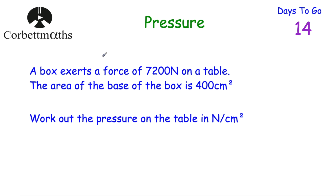A box exerts a force of 7,200 newtons on a table. The area of the base of the box is 400 centimetres squared. We've been asked to work out the pressure on the table in newtons per centimetre squared. Press pause and try this. We want how many newtons are applied for each centimetre squared, so we take 7,200 and divide it by 400 — that gives us the pressure.